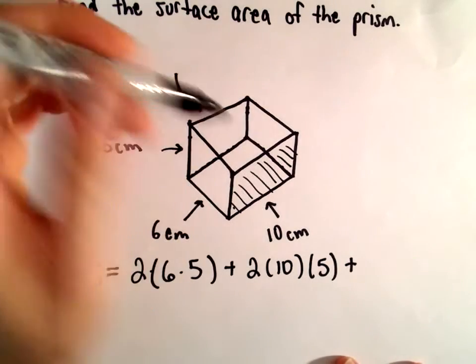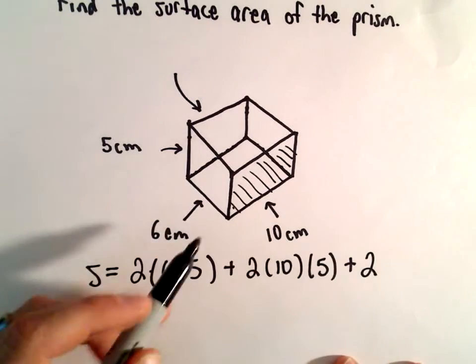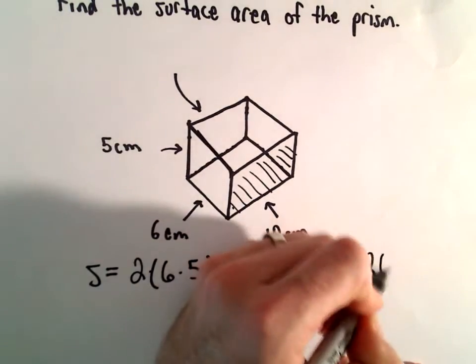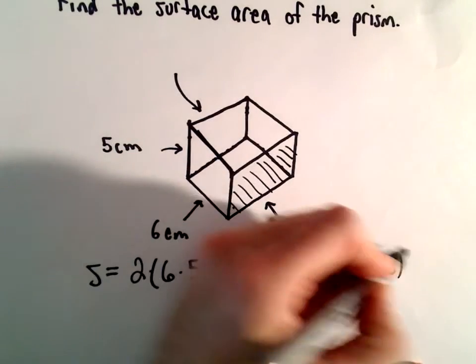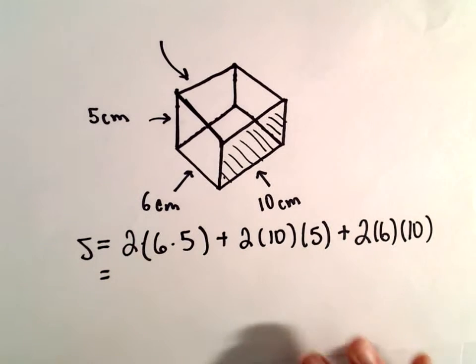And then we have to find the area of the top of the box and the bottom of the box. And again, there's two sides there. Well, the top of the box has a length of six and a width of ten. And again, now it's just a matter of simplifying.